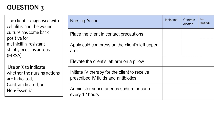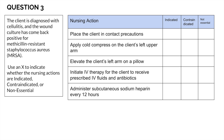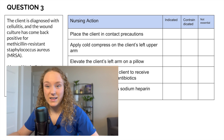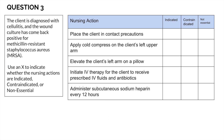Question three: the client is diagnosed with cellulitis and the wound culture has come back positive for methicillin-resistant Staphylococcus aureus, otherwise known as MRSA. Use an X to indicate whether the following nursing actions are indicated, contraindicated, or non-essential. The actions are: place the client in contact precautions; apply cold compress on the client's left upper arm; elevate the client's left arm on a pillow; initiate IV therapy for prescribed IV fluids and antibiotics; administer subcutaneous sodium heparin every 12 hours.